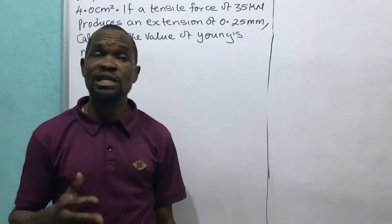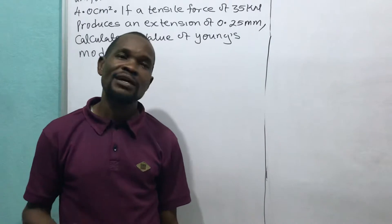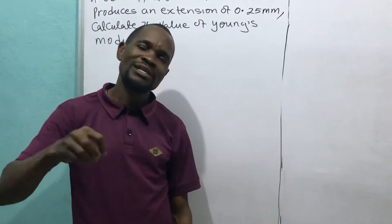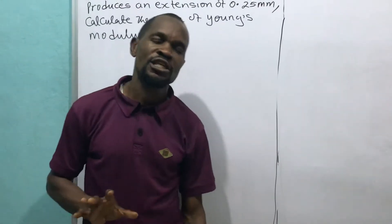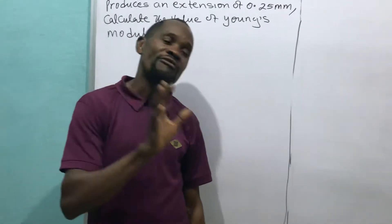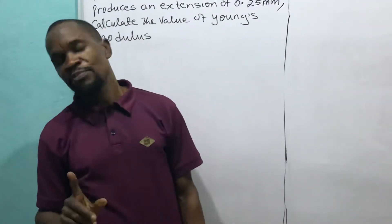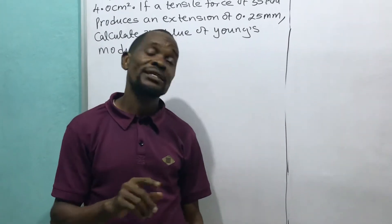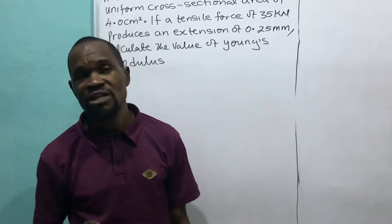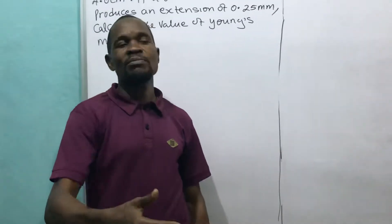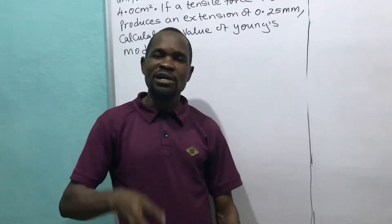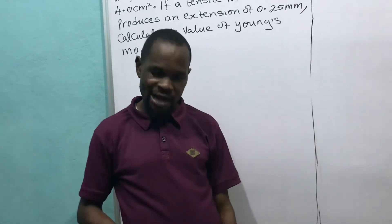In any WAEC exam, when given a question, select at least two questions from part two and answer them, then go back to part A and answer maybe three questions. If you can answer three questions correctly in part two, you have passed physics. In part B you answer four questions and in part A you answer five questions.